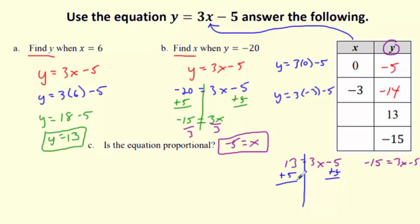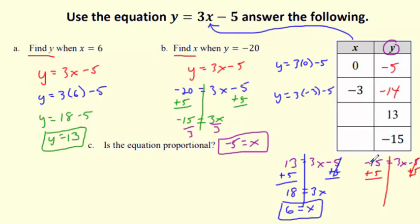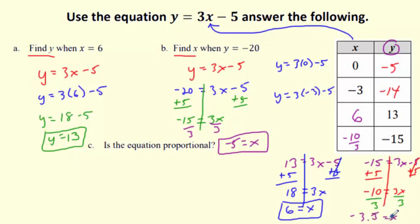Let's solve to finish these. When y is 13: 13 plus 5 is 18, those cancel, we've got 3x, divide both sides by 3 — x equals 6. When y is negative 15: get rid of the minus 5 by adding 5, so negative 15 plus 5 is negative 10 equals 3x, then divide by 3 — x equals negative 10 thirds. You could also say negative 3.3 repeating, but negative 10 thirds is fine.